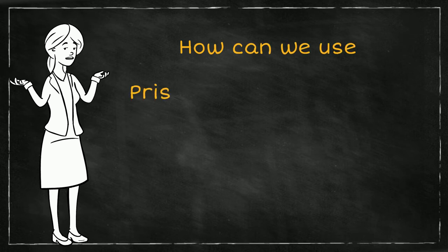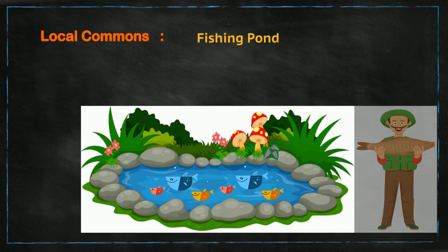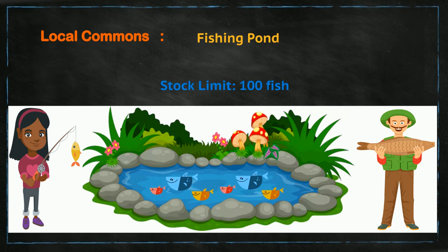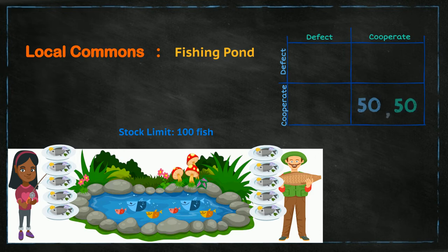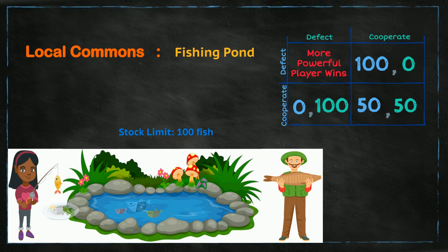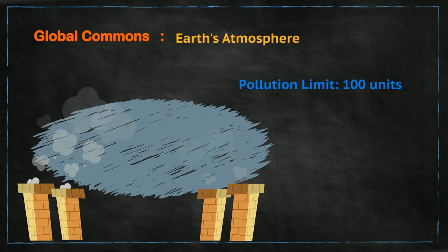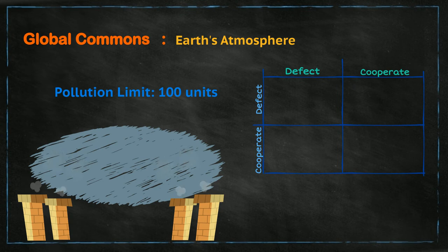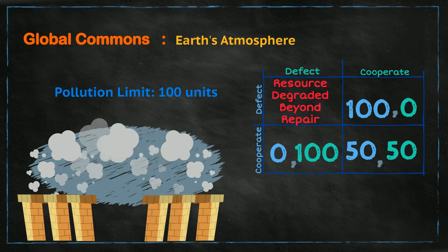So, how can we use the prisoner's dilemma game to understand cooperation in common pool resources? Let's say two people have access to a common resource like a fishing pond where 100 fish can be harvested in its best season. Each fisher wants to derive maximum yield from the pond. If they both decide to cooperate, they can divide the total harvest equally and get 50 fish each. But if they do not cooperate and one fisher decides to extract more fish, it would leave the other with very little. Another example could be a global resource like the Earth's atmosphere, which can tolerate, say, 100 units of pollution. If people decide to cooperate, they could all pollute equally at 50 units each and keep the total pollution level at 100 units. But if they do not cooperate and someone decides to pollute more than they should, it would make the resource unsustainable for everyone.